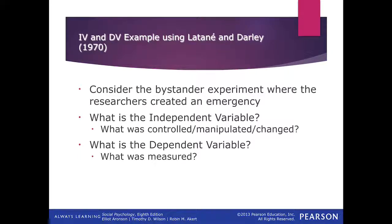The dependent variable was how many people actually went to get help. Staging this experiment was difficult — you have to create an emergency that's believable but not necessarily traumatic. They needed to make sure the emergency was believable, and in this case they chose a person having a seizure. That was something that wasn't overly traumatic but would elicit behavior requiring someone to get help.